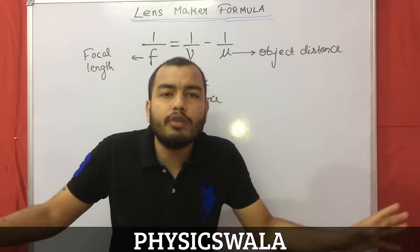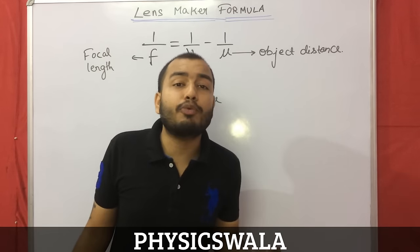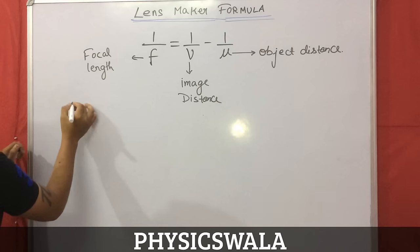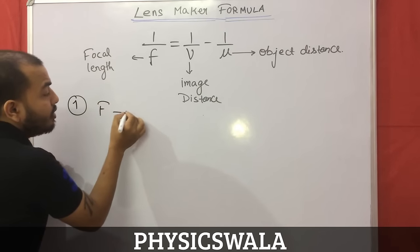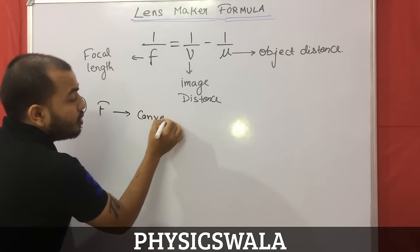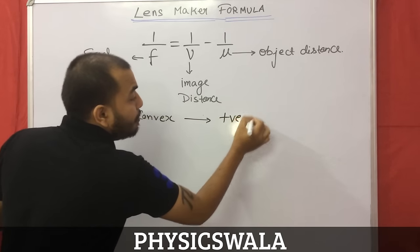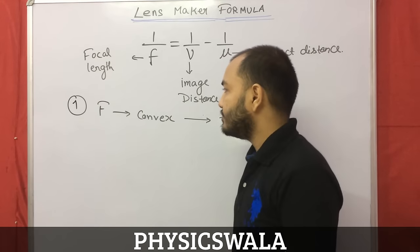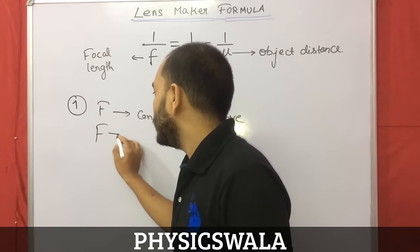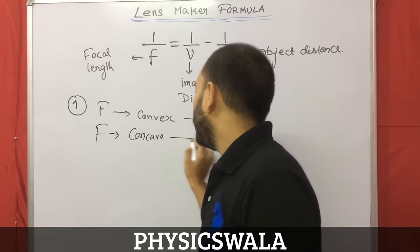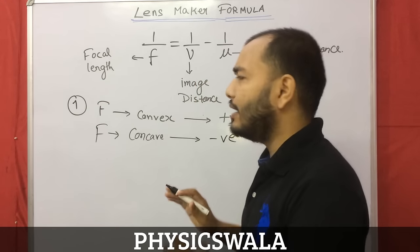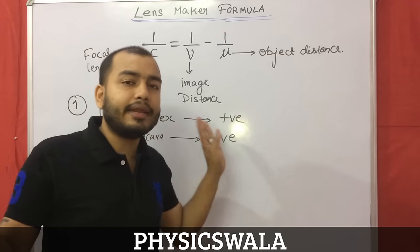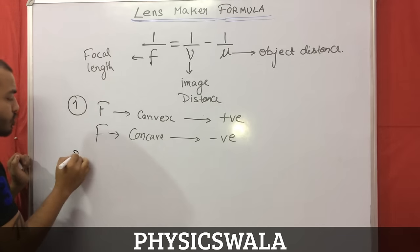There are basically four rules — just four rules — and those four rules will be sufficient to solve any lens-related problem. Rule number one: the focal length for a convex lens is always positive. And the focal length for a concave lens will always be taken as negative. Convex is positive, concave is negative.